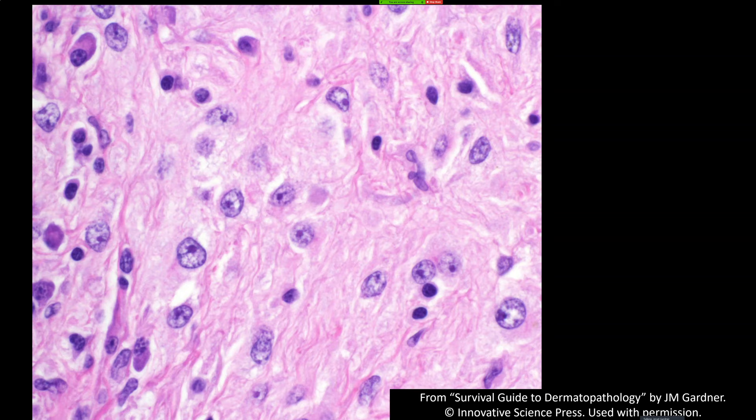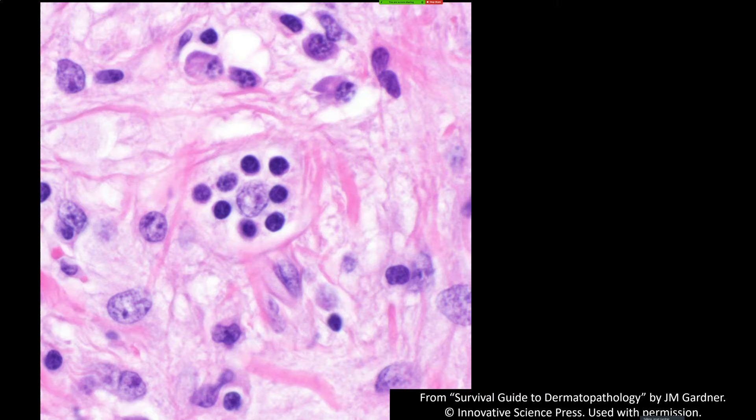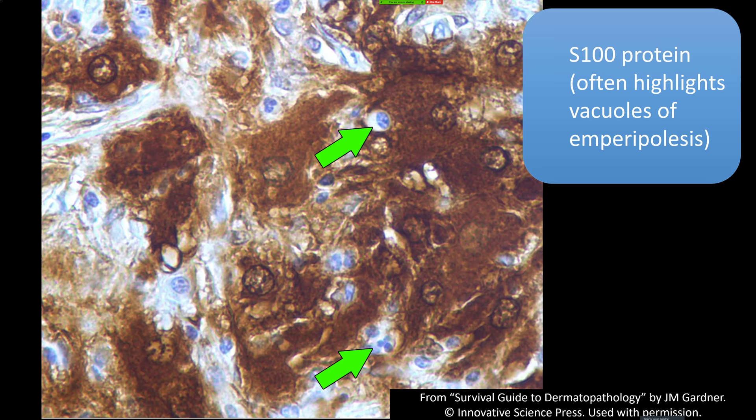Looking back at this slide, there is some emperipolesis — essentially everything you see here is histiocyte cytoplasm, so all the white blood cells are sitting inside the cytoplasm of the histiocytes. But it doesn't look as pretty as the pictures in books. You really don't need it to make the diagnosis in my opinion. Also, other things can show emperipolesis — juvenile xanthogranuloma does sometimes, and I've seen sarcomas and other things with white blood cells in their cytoplasm.